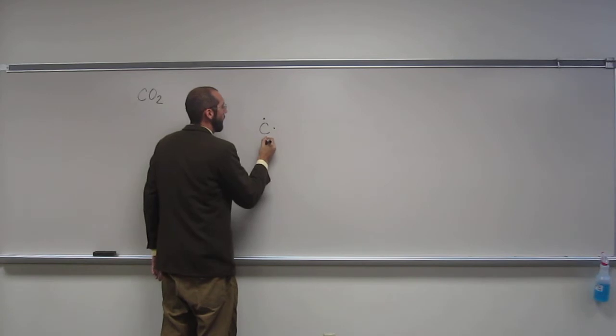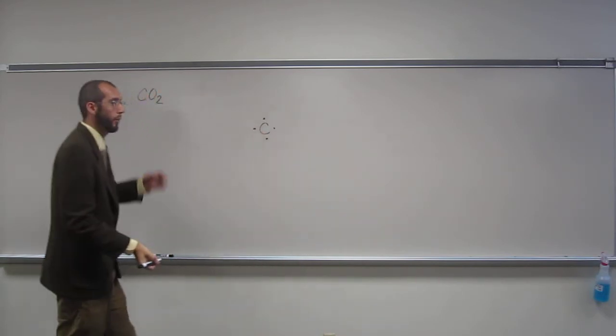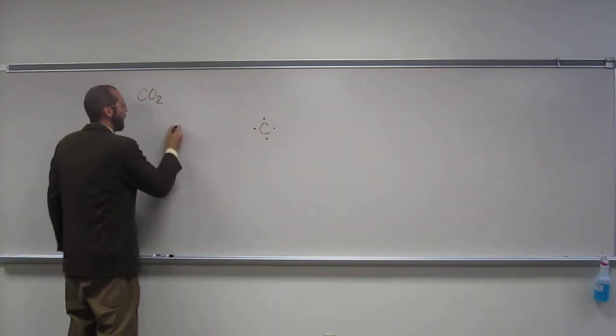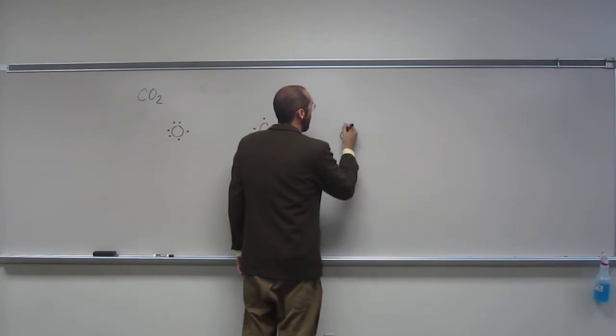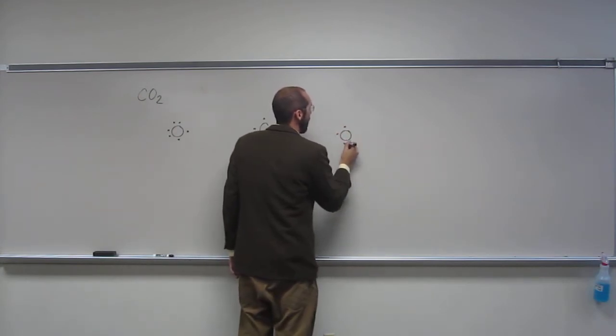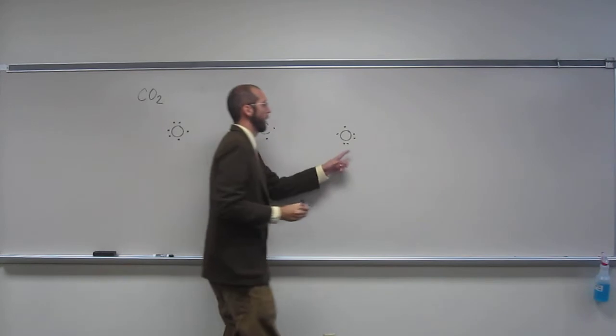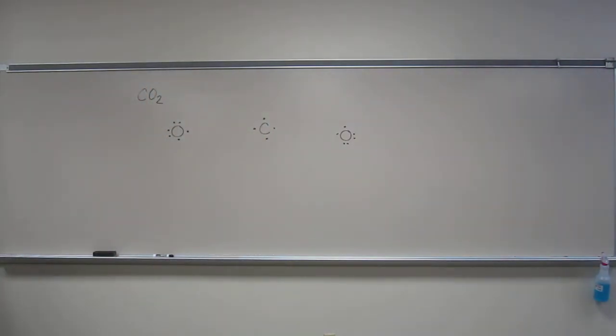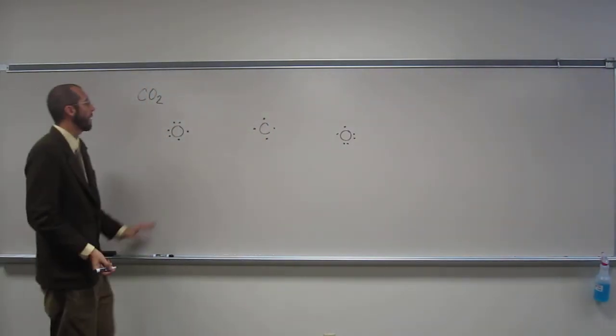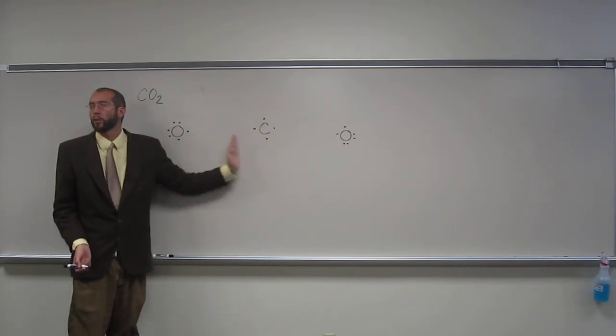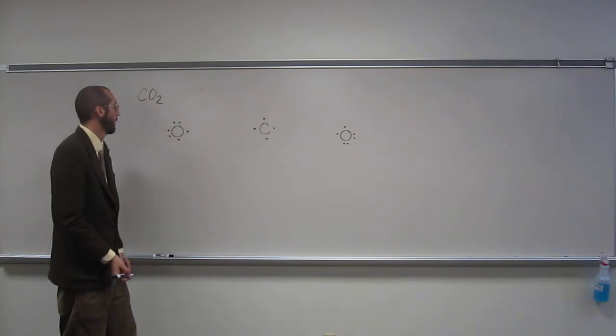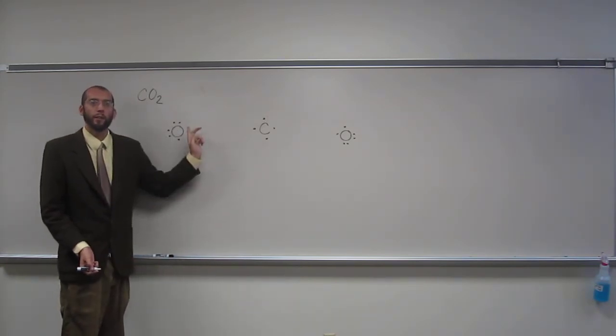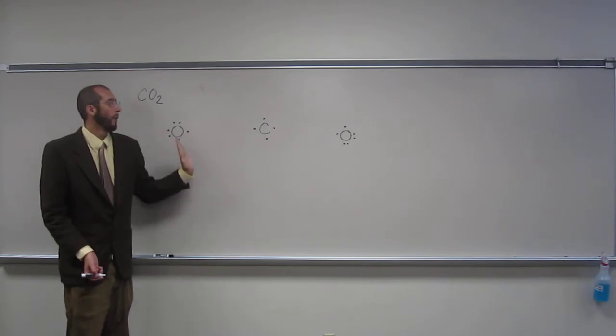So let's draw Lewis structure of carbon, Lewis structure of oxygen. And again, I'm just drawing these in this particular way because I know how I'm going to bond them. So how many bonds would you expect carbon and oxygen here? Two, right? Why? Because oxygen needs its octet. Is everybody okay with that?